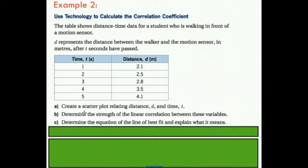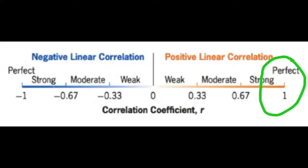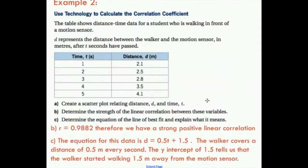We just created a scatter plot relating distance and time. To determine the strength of the linear correlation, our r value was 0.9882 - that's pretty close to a perfect positive correlation. The equation of the line of best fit, d = 0.5t + 1.5, tells us the walker covers a distance of 0.5 meters every second. The y-intercept of 1.5 tells us the walker started walking 1.5 meters away from the motion sensor.